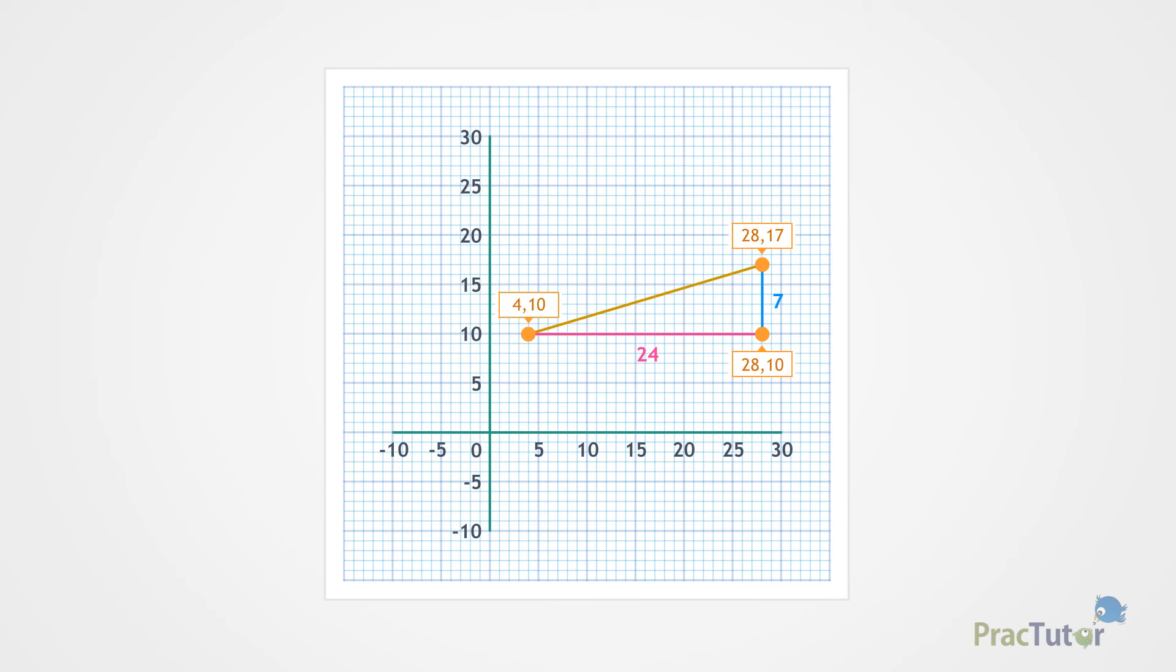Now, you can use the formula based on the Pythagorean theorem and substitution to calculate the distance between 4, 10 and 28, 17.